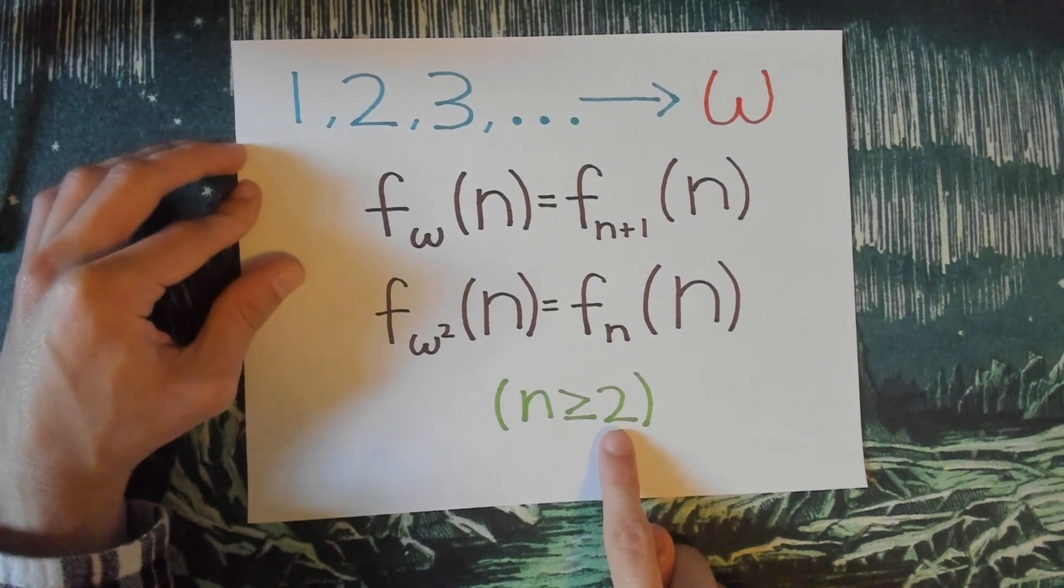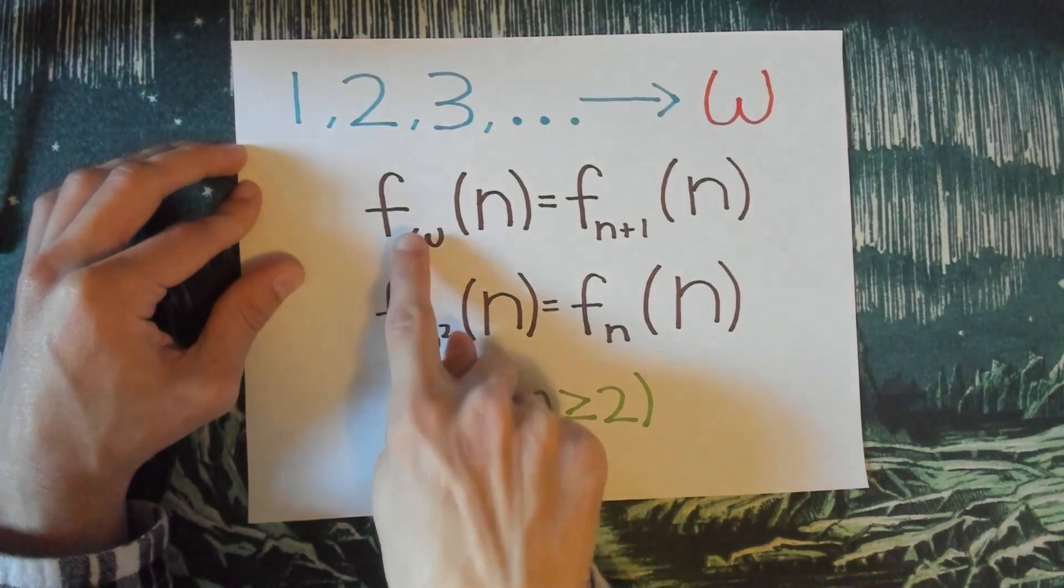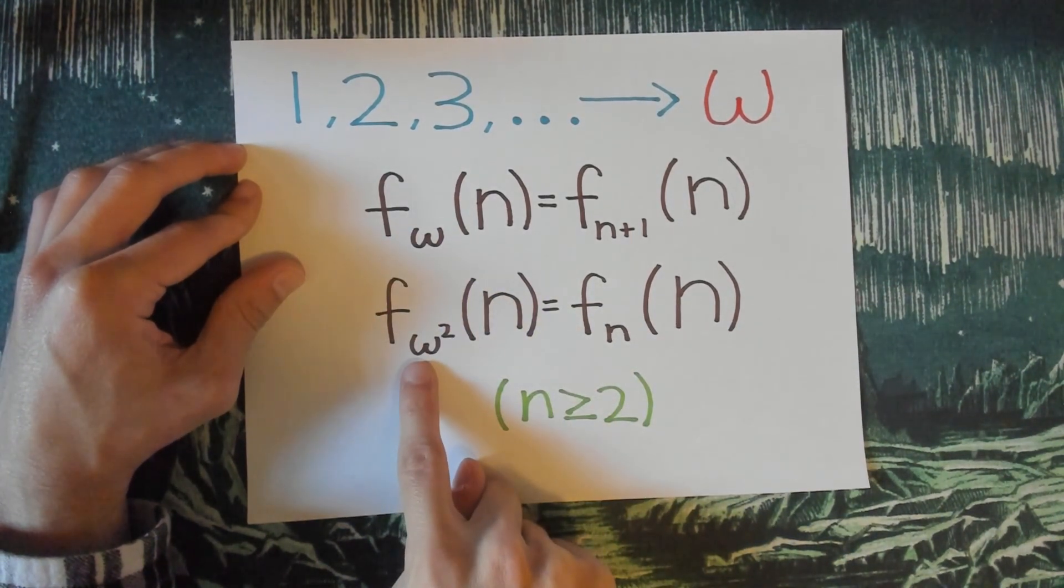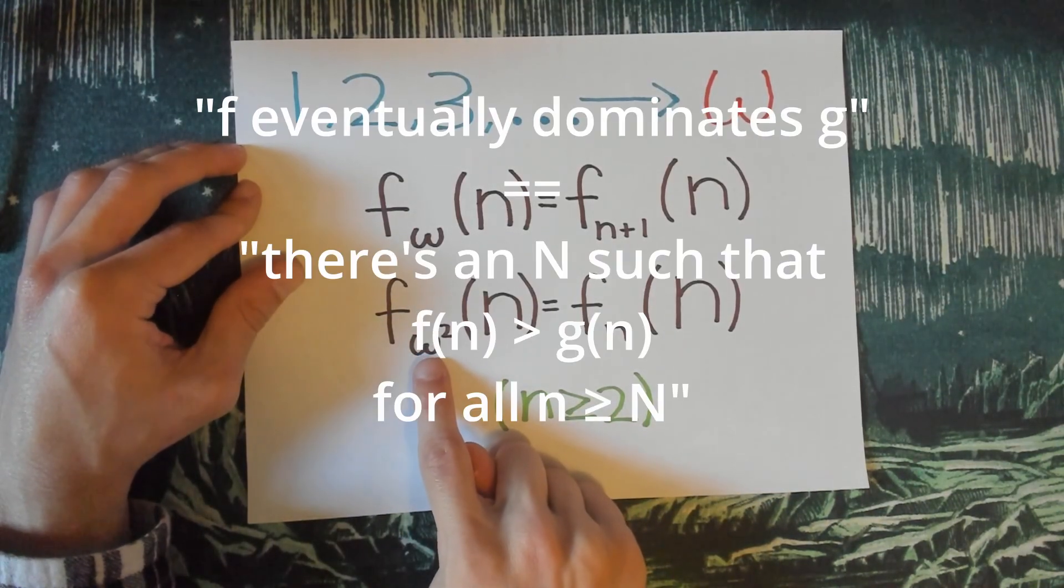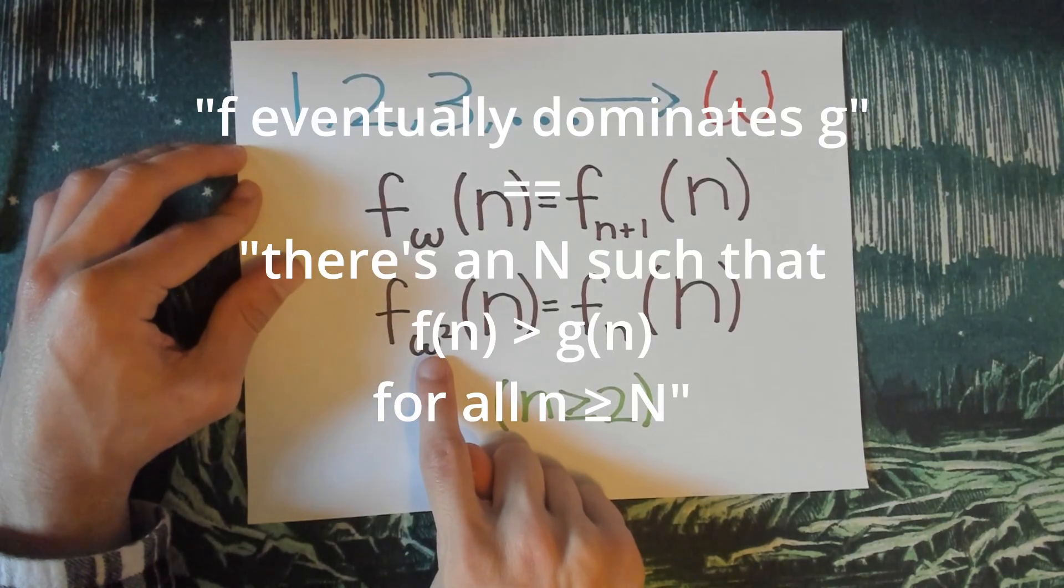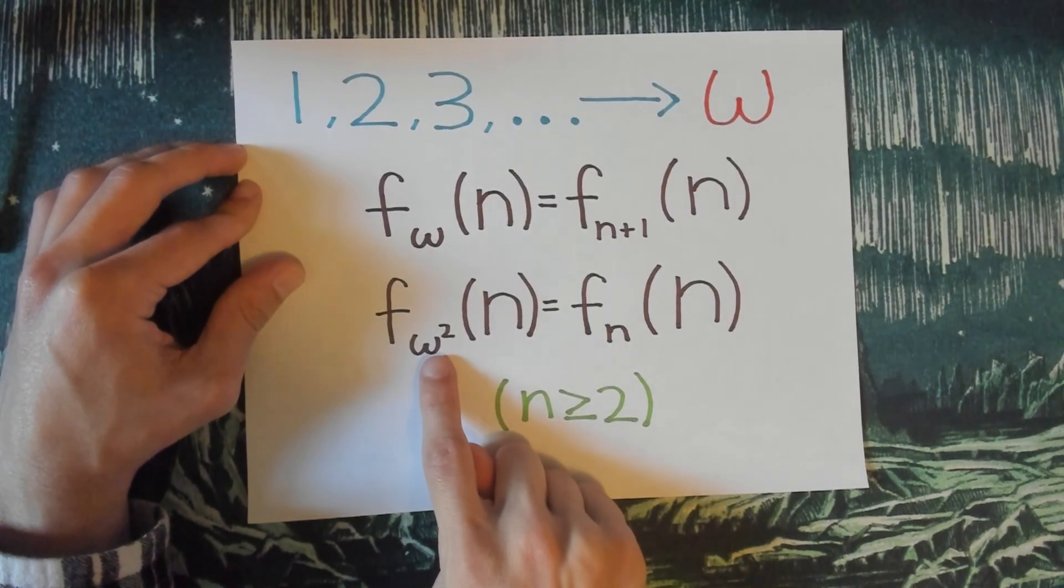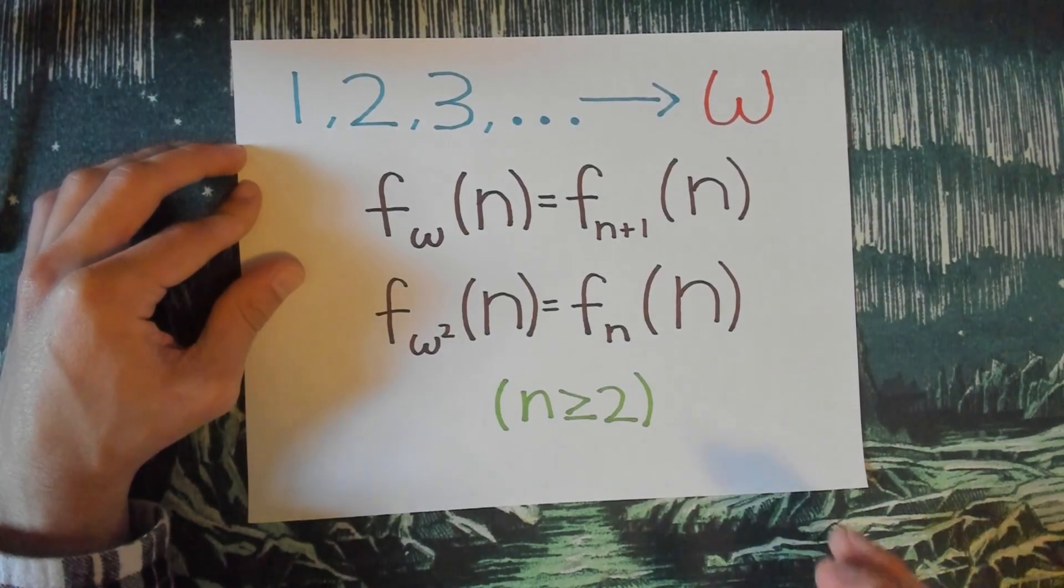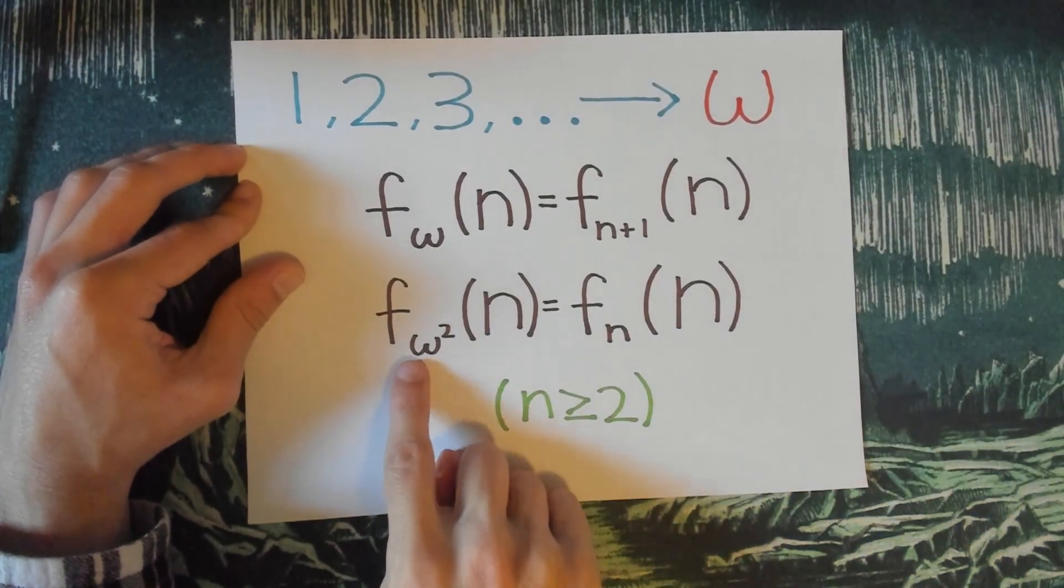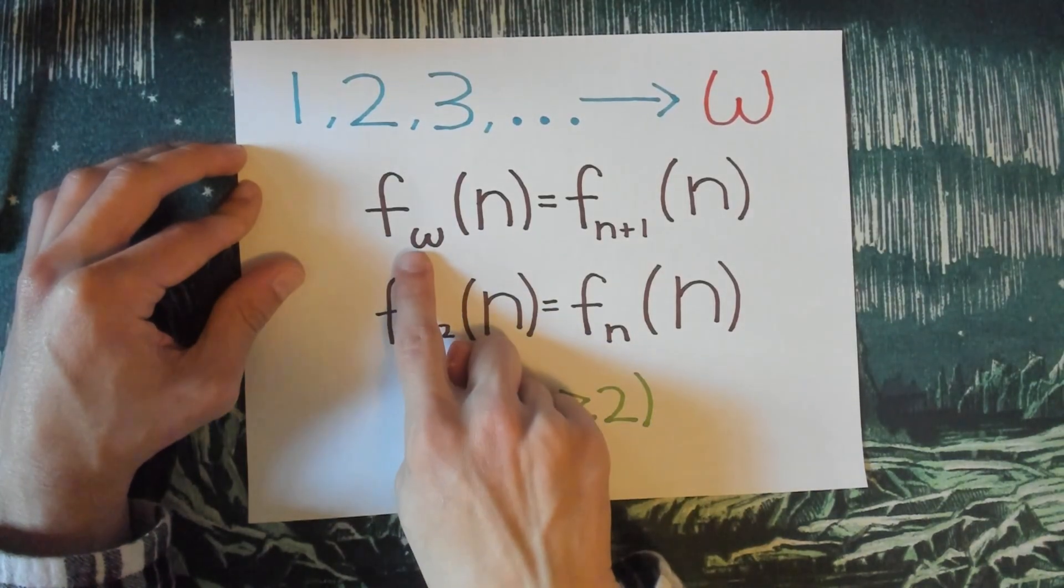And this is all for n being greater than or equal to 2. But that's okay, because we're just talking about f omega growing faster than f omega squared, which just means it has to eventually forever be larger than f omega squared, right? That's what it means. So by choosing the fundamental sequences the way we have, we have now created a situation where something higher up in the hierarchy grows more slowly than something lower down in the hierarchy.